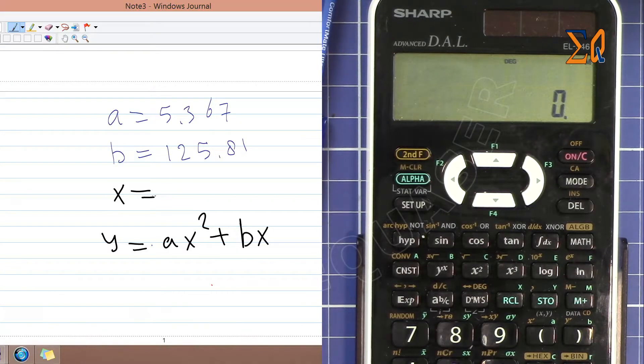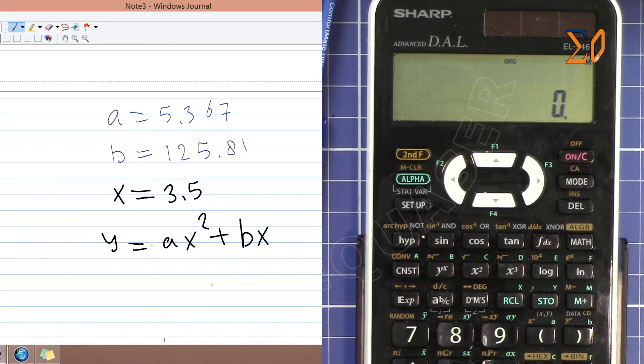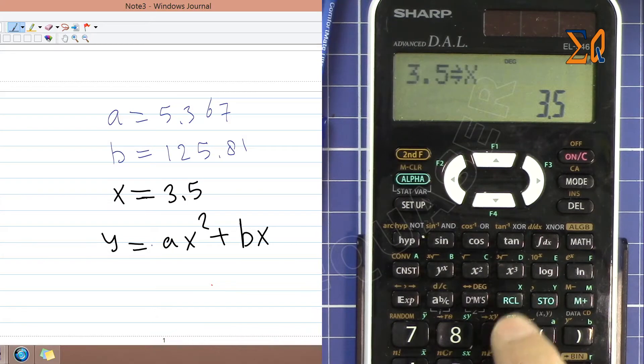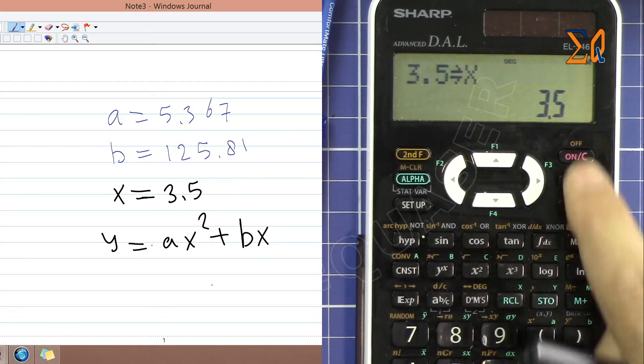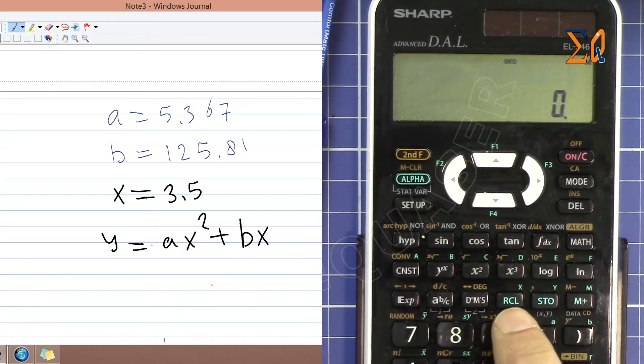Let's say x is equal to 3.5 and let's store x into the memory. So 3.5, store, and then just press X. You don't have to press alpha or anything. Now all the values are here.